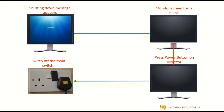After a few seconds, the monitor screen will turn blank. Press the power button on the monitor to shut it down. Once this is done, you can turn off the main switch. Your computer will then shut down completely.